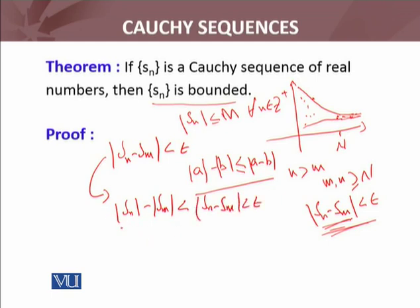So I will take this and get |Sn| < ε + |Sm|. Now if N > capital N, then all subsequent terms of the sequence are smaller than this number.